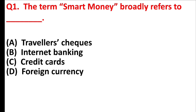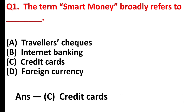The term 'smart money' broadly refers to blank. Answer is option C: credit cards.